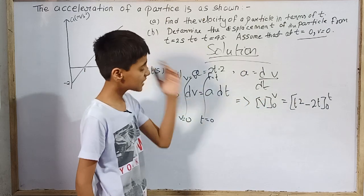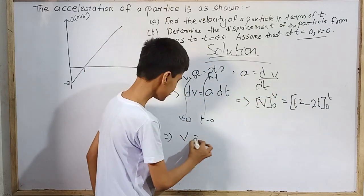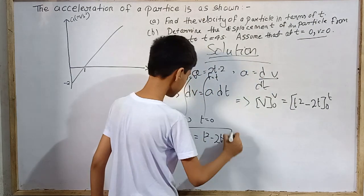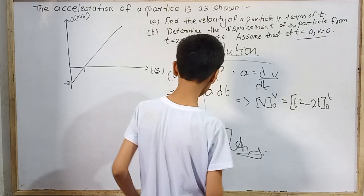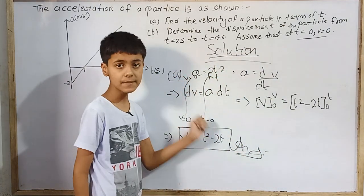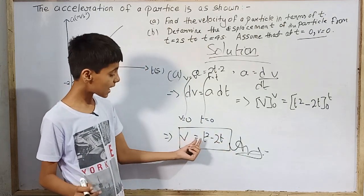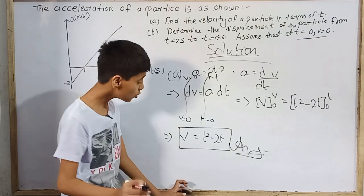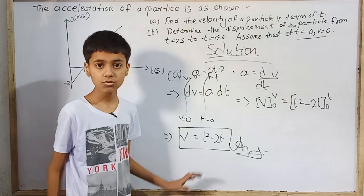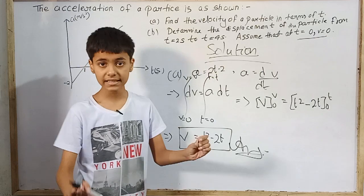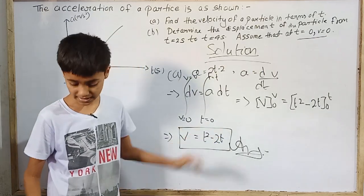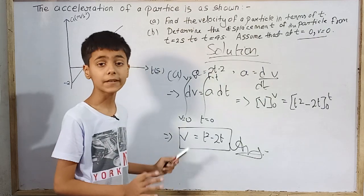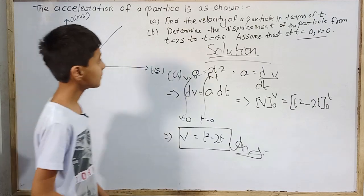This is the exact relationship between velocity of the particle and time. If I need velocity at 2 seconds, that will be v equals 2 square, 4 minus 2 into 2, so the velocity at 2 seconds will be 0. If I need 4 seconds, this will be v equals 16 minus 8, which is 8 meters per second. But we didn't want the velocity at any particular instant - we just required the expression for it. So this was the solution to problem number A, which is solved.